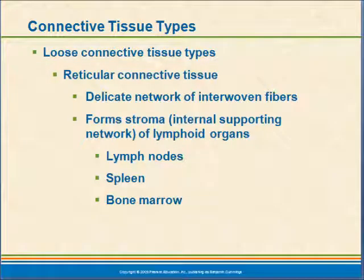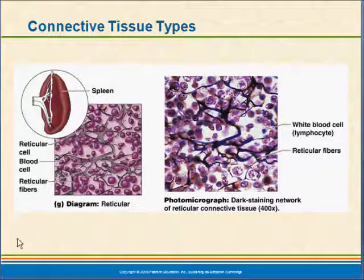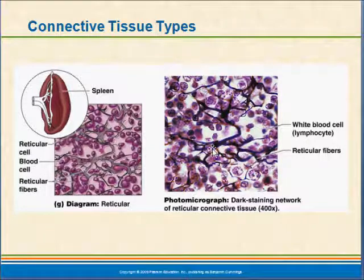Another loose connective tissue is reticular connective tissue. This is made mostly of reticular fibers that run through the structure of organs — it is an internal supporting network of largely lymphoid organs, which include lymph nodes, spleen, and bone marrow. We also see it in the liver. This helps those organs retain their shape and helps keep the cells in the appropriate relationship to one another. It is a little difficult when looking at reticular connective tissue to tell exactly where the tissue is and where the organ is, because it's all interspersed.